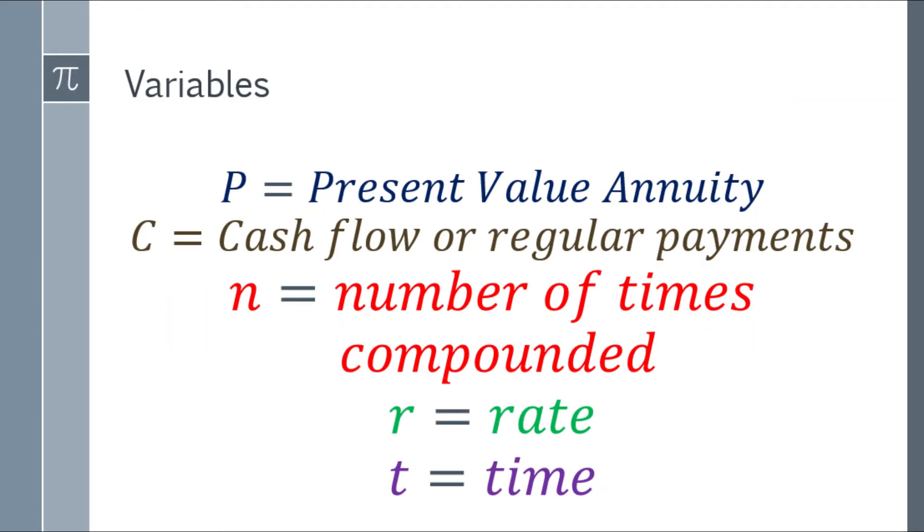So let's start with the variables. We have P for the present value annuity, C for cash flow or regular payments, letter N for number of times compounded, R for the rate, and lastly T for time.